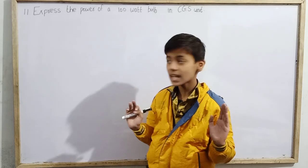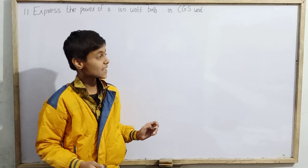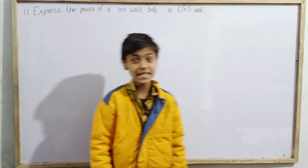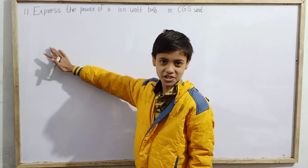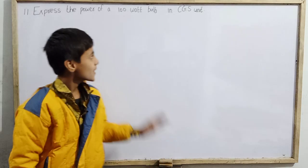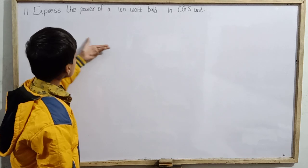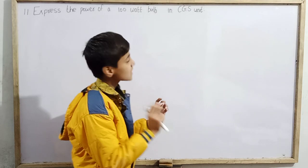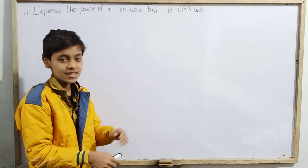Hello everyone and welcome back to SK Wander Kids. Today we are going to do the introduction to physics from the famous HD1 Mabook Concepts of Physics, question number 11 from exercises. The question is: express the power of a 100 watt bulb in CGS units. The question is very short.